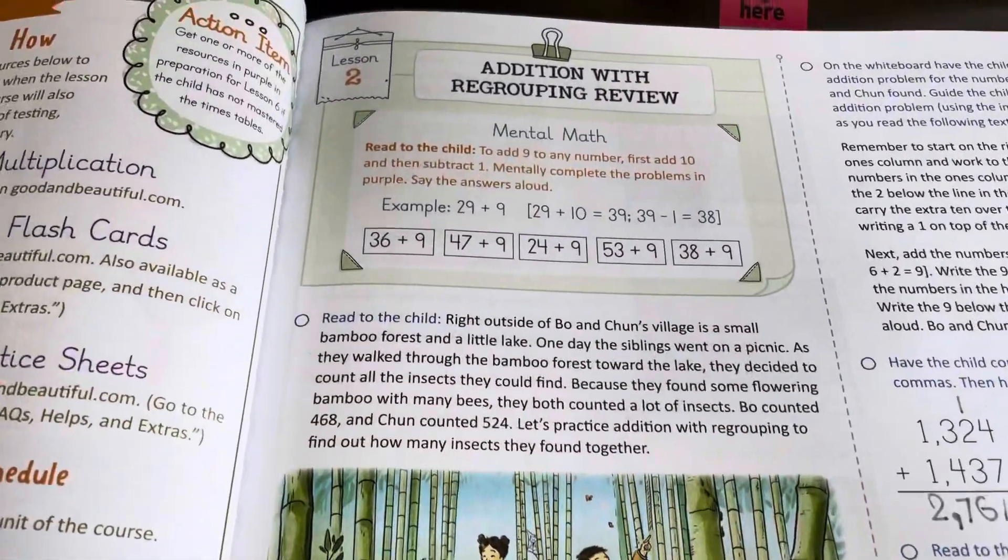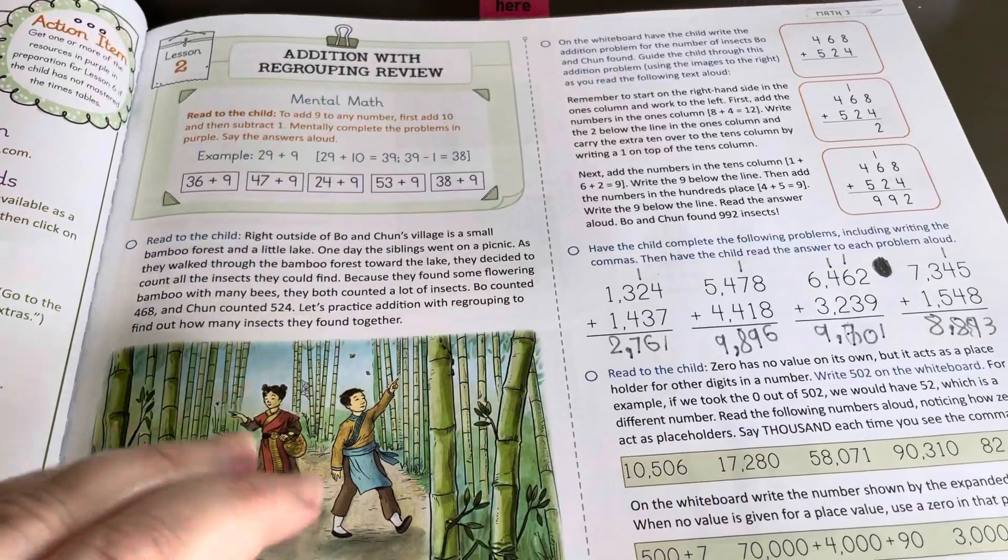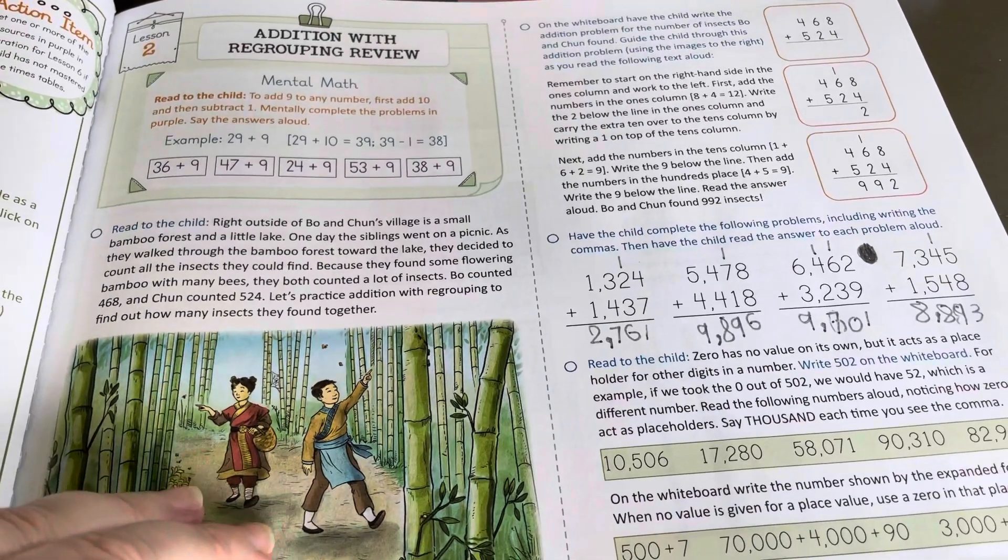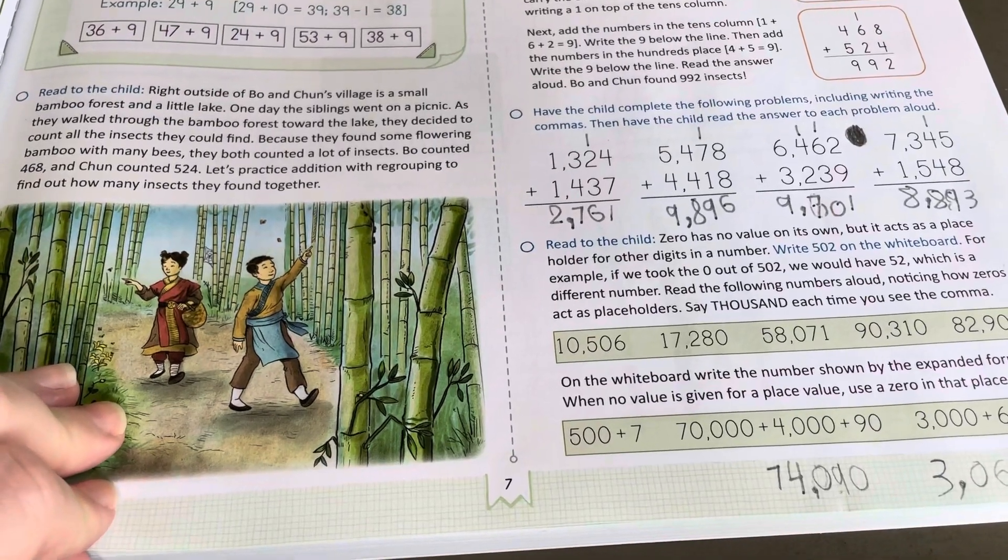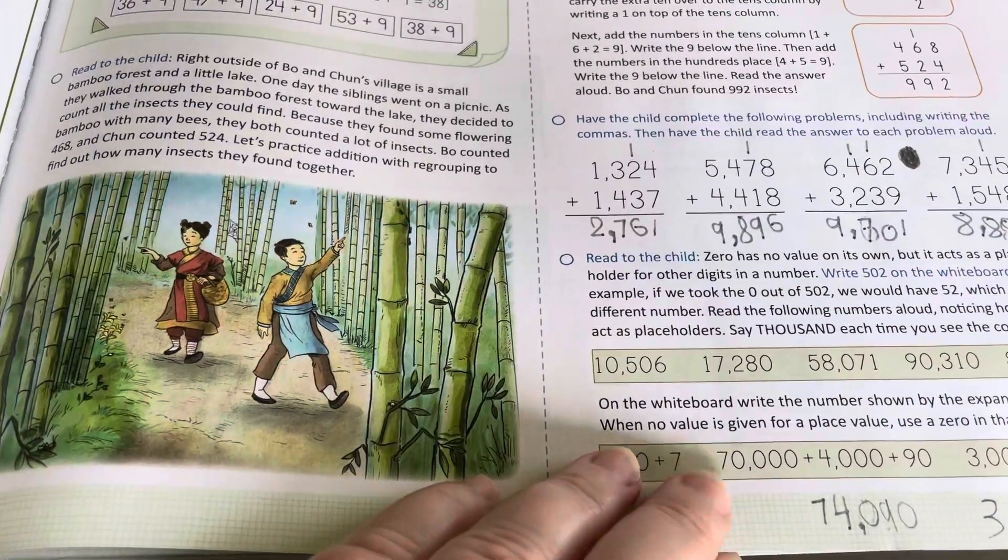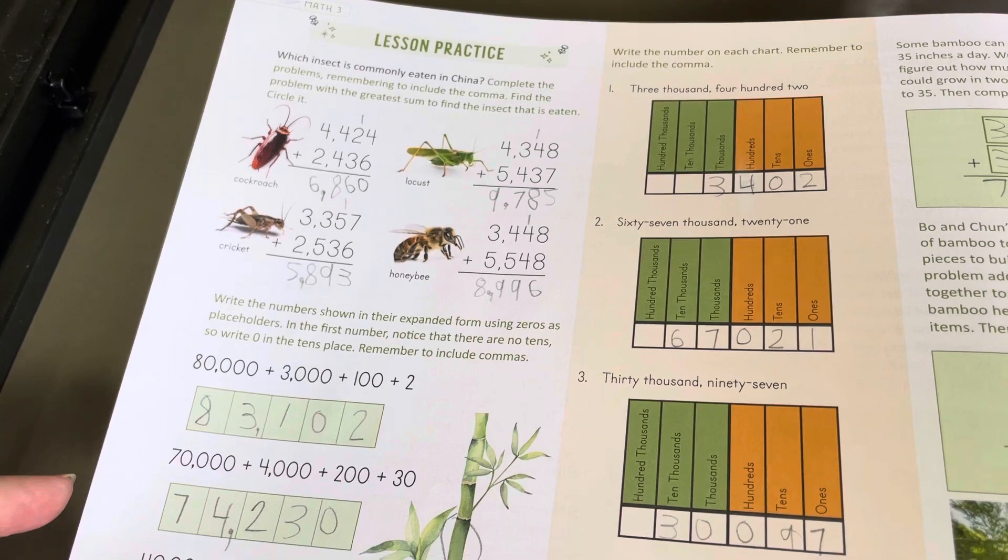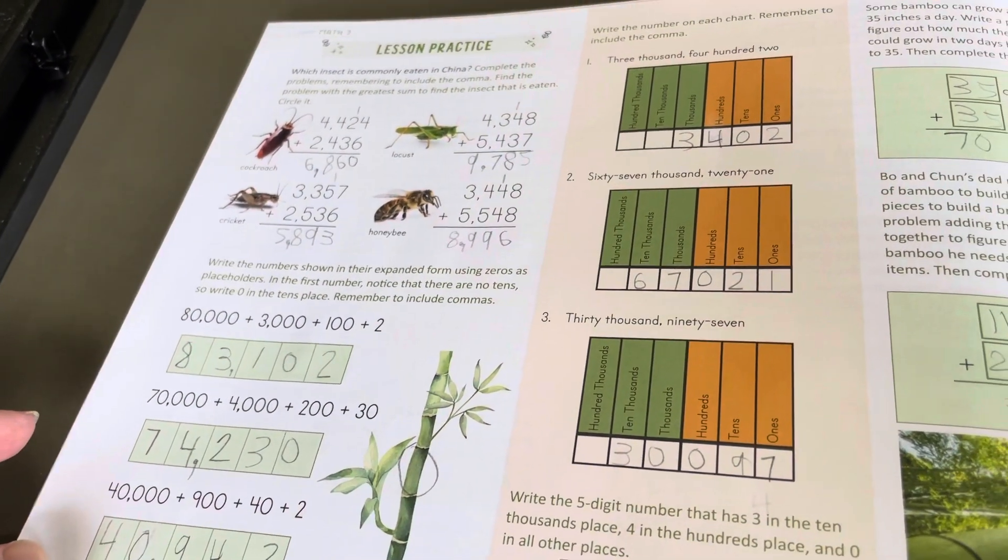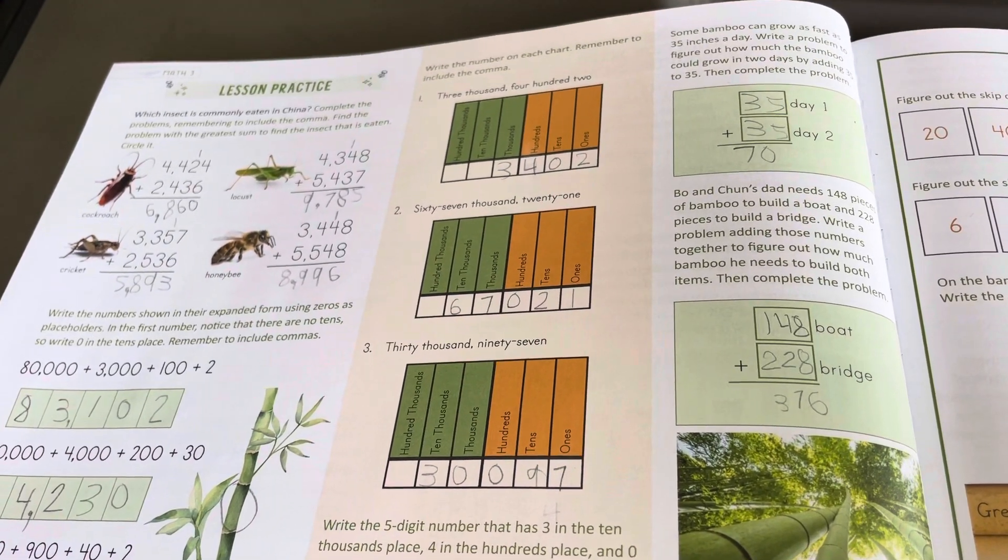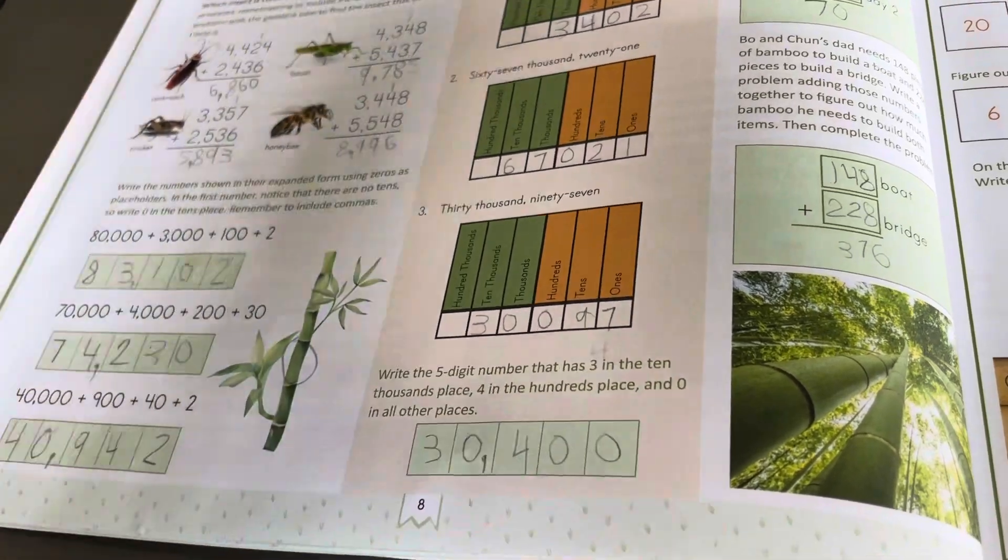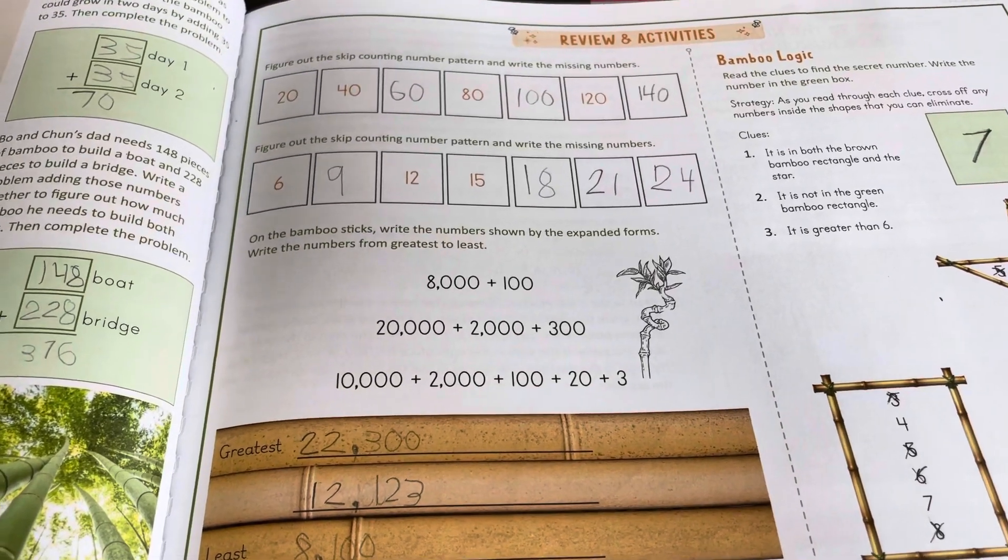First you have some mental math to work on, and then you have the lesson that requires reading, maybe working some stuff on a whiteboard or chalkboard. One thing I do not like is the pages are very busy. And then there's where he practices what we learn in the lesson. There's a lot of practice, more so than second grade. And there are some word problems, which is also an improvement.